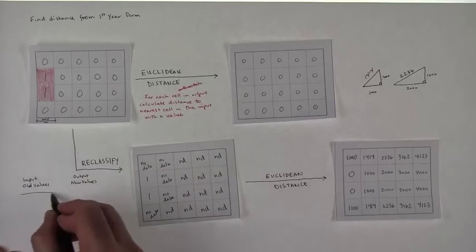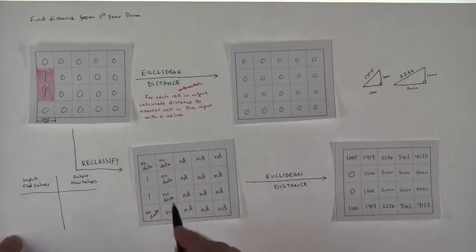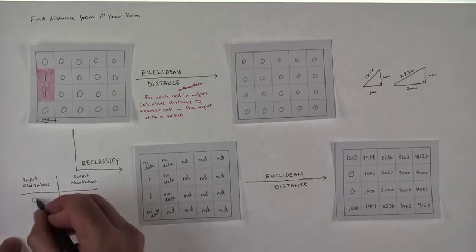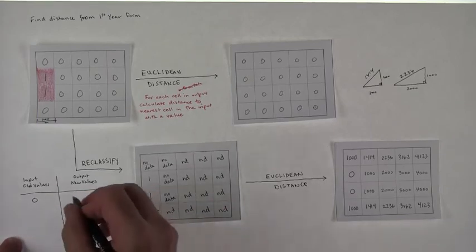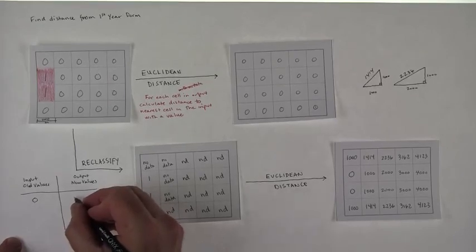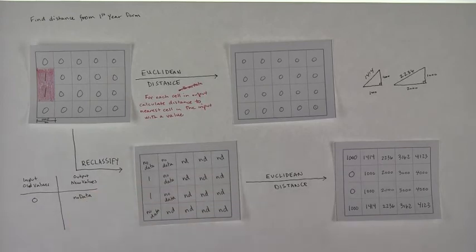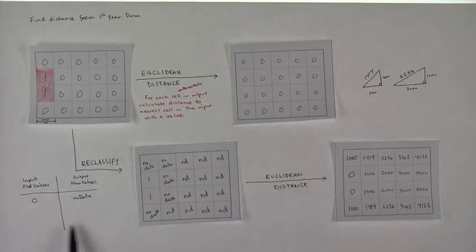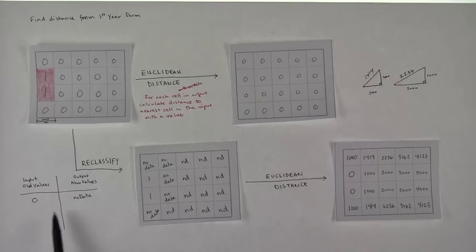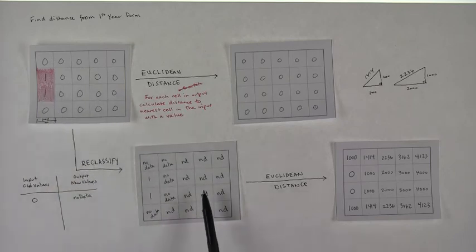And in this reclassifying table, you basically, to get this, you would say anything that is zero is going to go to no data. And then the idea is that you could leave everything else blank. Because if you leave it blank, the original values here are just going to slip through. Is that fair?